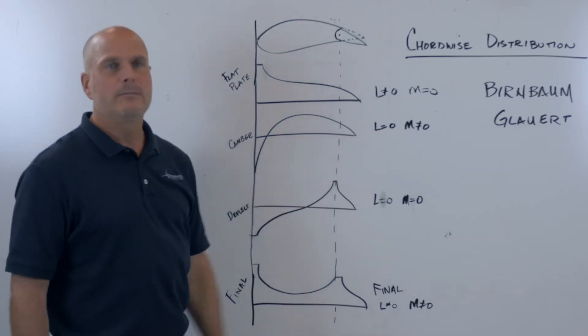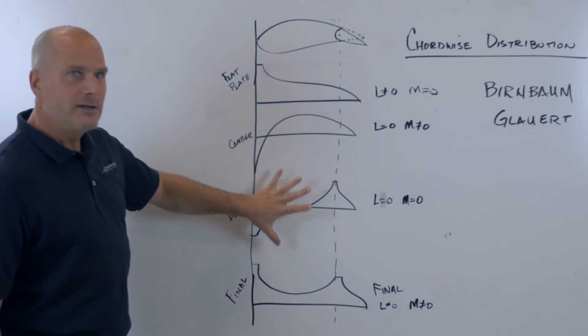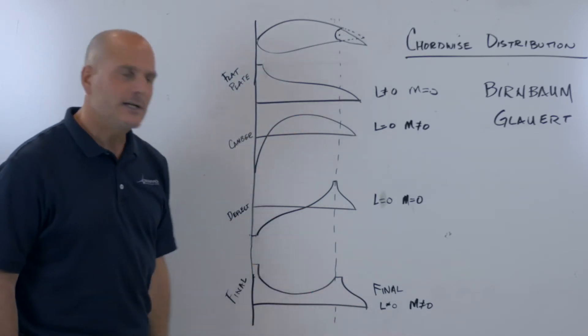The camber has no lift but a non-zero moment. It's the same with deflection. So you combine all these three together and you end up with the final distribution that looks like that.